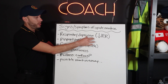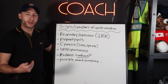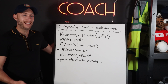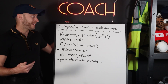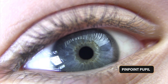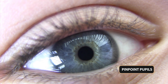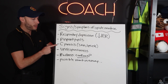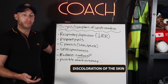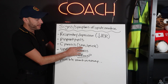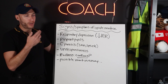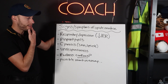Pinpoint pupils bilaterally on both sides. Cyanosis is a discoloration or blueing of the skin. It can happen in the skin, around the lips, and in the nail beds — really look around the lips for example.